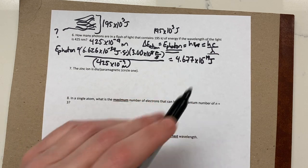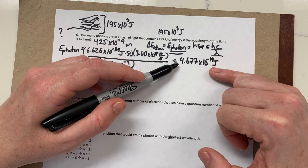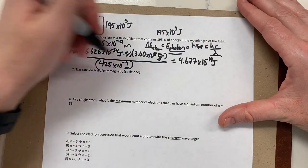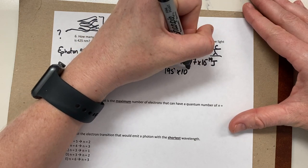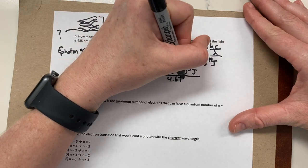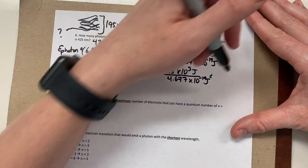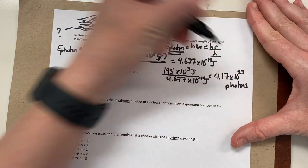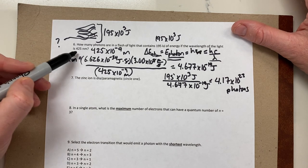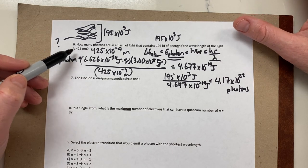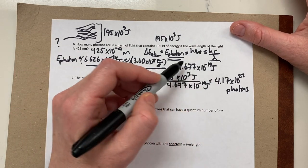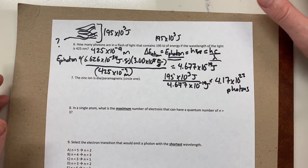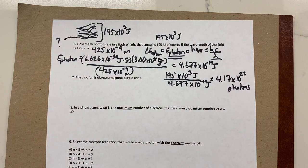The question asks for the total number of photons. We take the total energy — 195×10³ joules — and divide by the energy of one photon — 4.677×10⁻¹⁹ joules — giving us 4.17×10²³ photons, which is almost a mole. If your answer comes out to 10 to the negative something, that wouldn't make sense — you need at least one photon, so be careful there.